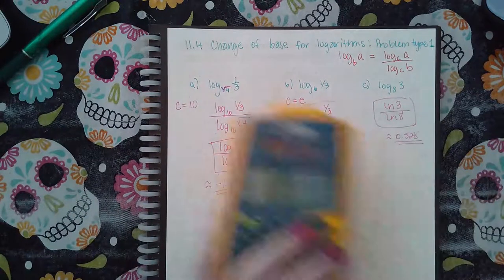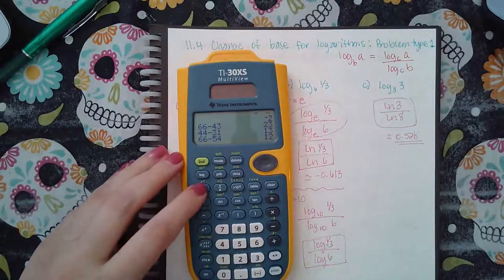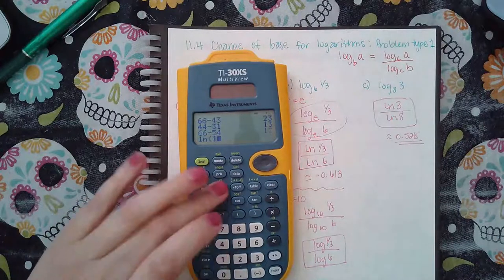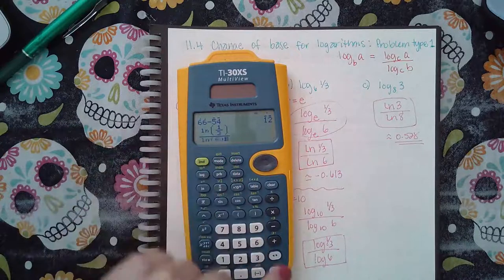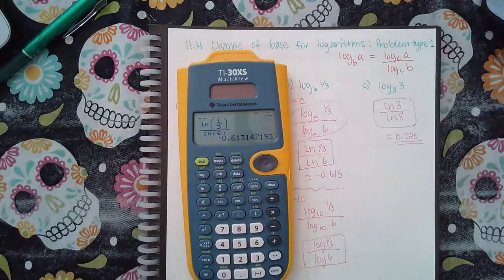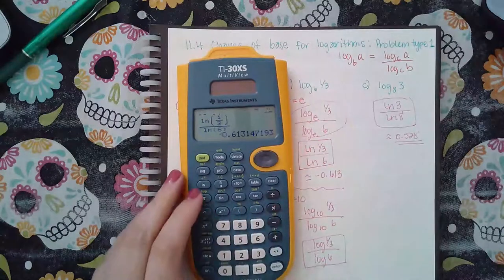So when I changed it to the natural log, I had the natural log of one third over the natural log of six, and we got this negative 0.613.